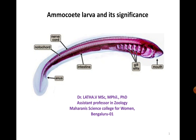Cyclostomata means circular-mouth-bearing organisms. The best examples of these Cyclostomatans are Petromyzon and Myxon. Now, why is this Ammocoetes larva so important? Why do we need to study it in detail? We will try to learn how these Ammocoetes larvae are formed, what their structure is, and how they metamorphose into an adult Petromyzon.